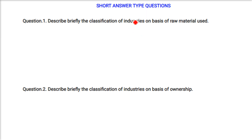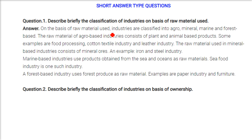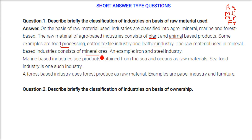Describe briefly the classification of industries on the basis of raw materials. On the basis of raw materials, industries are classified into agro-based, mineral-based, marine-based, and forest-based. Agro-based industries use plant and animal products as raw material — examples include food processing, cotton textile, and leather. Mineral-based industries use mineral ores — example: iron and steel. Marine-based industries use resources from seas and oceans — example: seafood industry. Forest-based industries use forest produce — examples: paper and furniture.